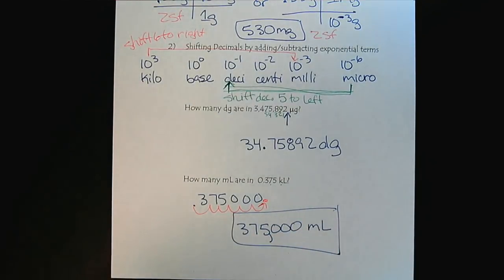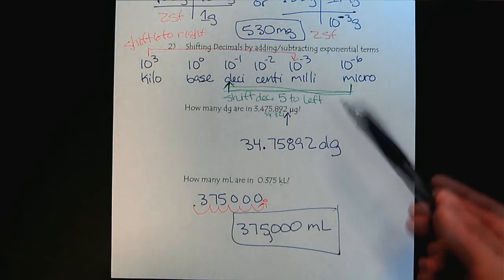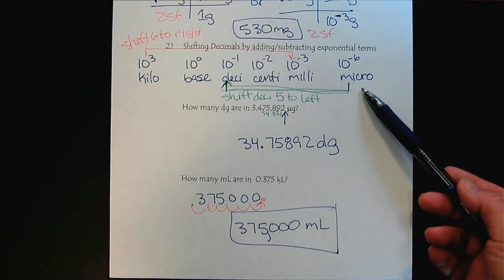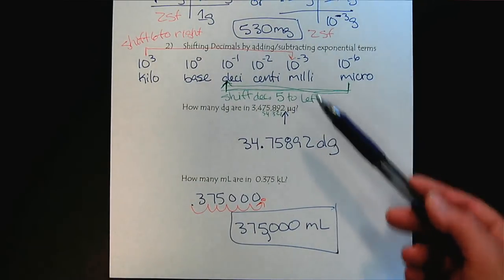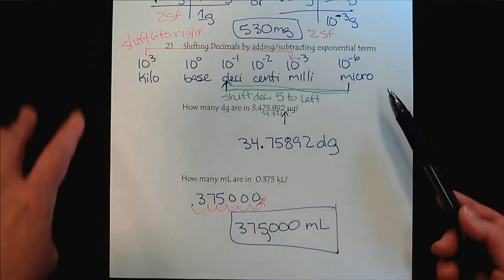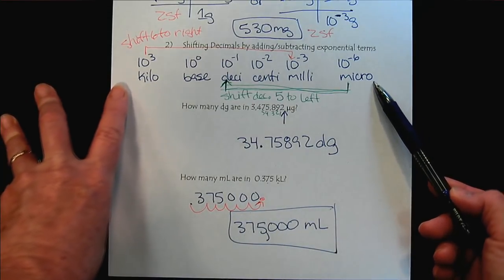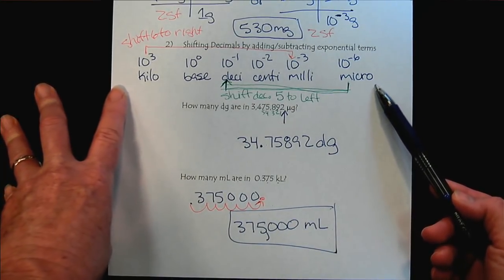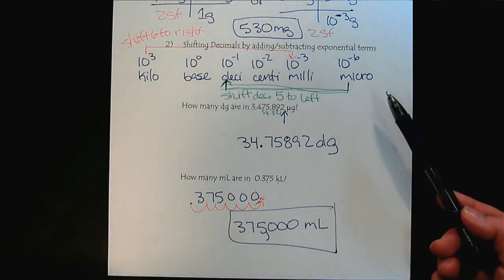So one method is not superior to the other. It's whatever feels most comfortable to you. I think the idea though, for those of you entering allied health careers, is you want to get to where you can shift back and forth. And these are the primary metric units that you'll be using in your profession. There are many more metric prefixes out there, but you're not going to need to worry about those.